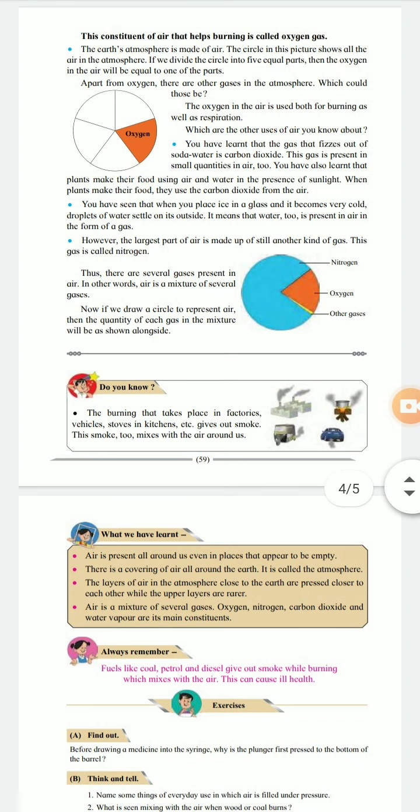Thus, there are several gases present in air. In other words, air is a mixture of several gases. Now, if we draw a circle to represent air, then the quantity of each gas in the mixture will be as shown alongside.